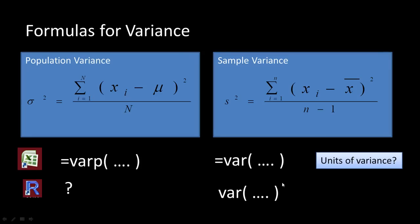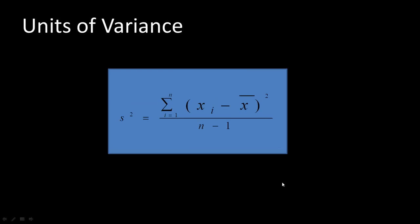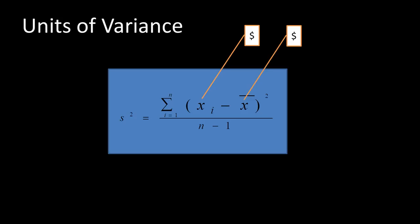What are the units of variance? If we are talking about annual incomes of people, the individual observations are in dollars. So xi is dollars, the mean of incomes is also dollars, and xi minus x-bar is dollars. When you square that deviation, you get dollars squared.